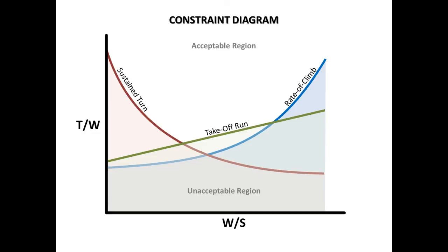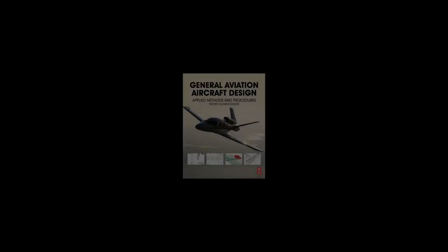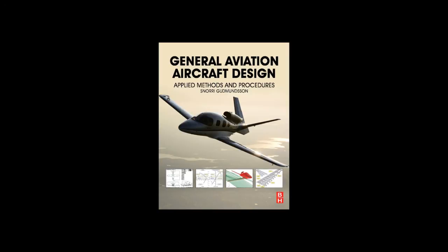Consequently, if we can establish a reasonable estimate for gross weight — and granted, it is not always easy — we can determine both the required wing area and required thrust, giving us an idea about what sort of power plant we need for our new aircraft. Additionally, knowing the wing area, we can identify what sort of high-lift system the airplane must feature to meet the stall speed requirements. In the next part of this video, we will look at a number of useful formulas from my book and use them to plot the constraint diagram for the aforementioned requirements.